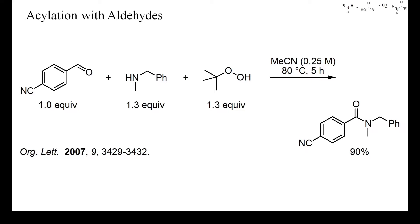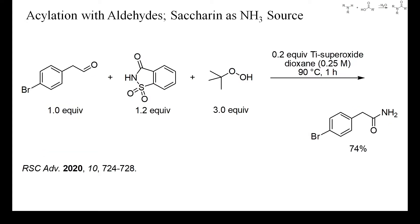Acetonitrile is a particularly good solvent for such reactions because it is highly resistant toward oxidation and sometimes activates peroxides, as for instance in the so-called Payne oxidation. In this example, a reactive aldehyde was converted into an amide by treatment with saccharin as a synthetic equivalent of ammonia. As an oxidant, tert-butyl hydroperoxide was used and the oxidation was catalyzed by a titanium salt. I find it surprising that saccharin, despite its high chemical stability, can act as an ammonia source. At least, it can be dosed more accurately than ammonia.